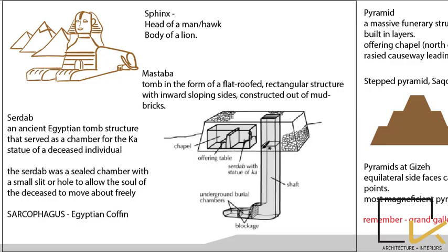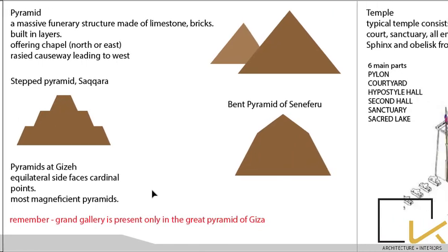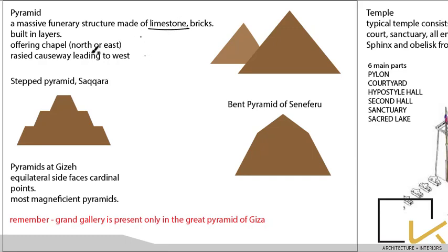Sarcophagus is the Egyptian coffin where the dead bodies are mummified and then placed. Egypt is famous for pyramids — massive funerary structures made up of limestone bricks, built in layers. The offering chapel of the pyramid is located either in the north or east.